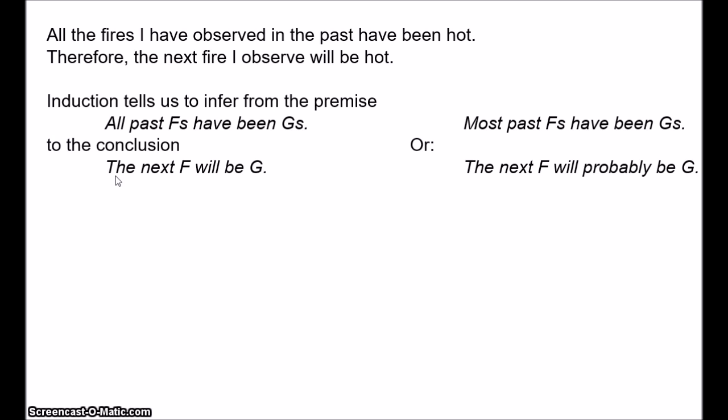Assuming that we've observed many F's in a wide variety of conditions, this looks like a pretty reasonable argument. There's also a kind of probabilistic formulation: we infer from 'most past F's have been G's' to 'the next F will probably be G.' Hume's argument applies to both of these formulations. The question is why should we think that applying this rule gives us any reason whatsoever to believe the conclusion?